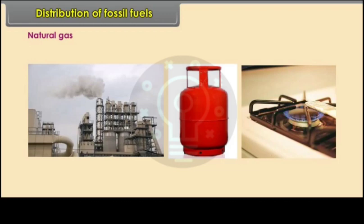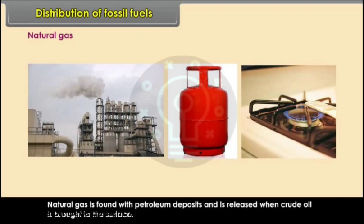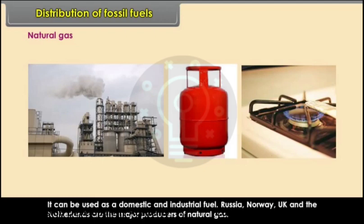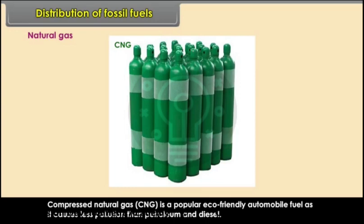Natural gas is found with petroleum deposits and is released when crude oil is brought to the surface. It can be used as a domestic and industrial fuel. Russia, Norway, UK and the Netherlands are the major producers. Compressed natural gas (CNG) is a popular eco-friendly automobile fuel as it causes less pollution than petroleum and diesel.